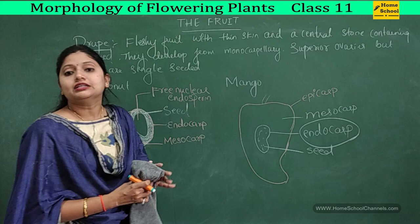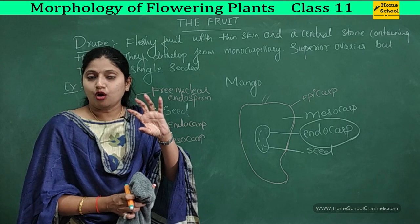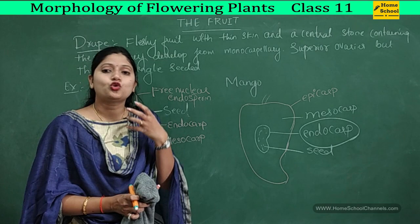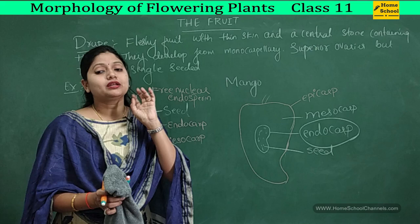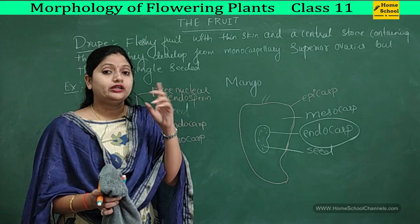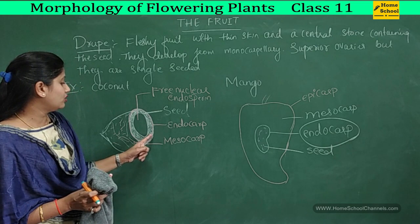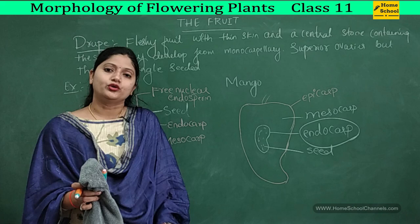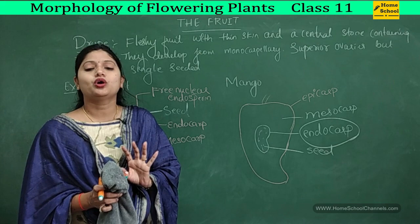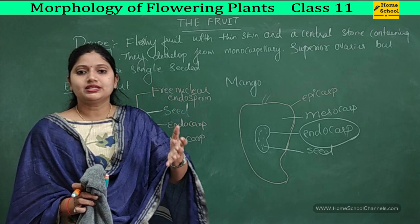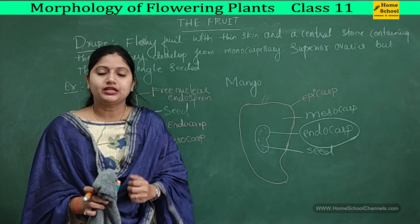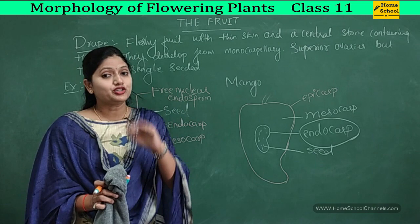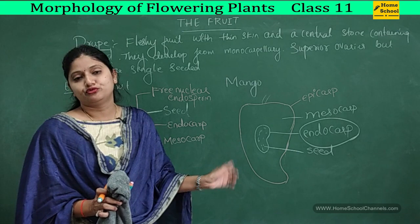Any fruit with very thin skin, a central stone part containing the seed, developing from a monocarpillary superior ovary, and having only one single seed — such fruits are called drupes. So to summarize: simple fruit, aggregate fruit, composite or multiple fruit, and the drupe as a variation of simple fleshy fruit — these are the types of fruits.